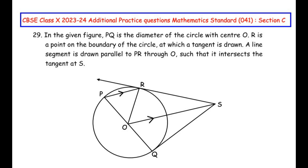Hello and welcome to my channel. In this video we are going to solve the 29th question from CBSE class 10 2023-24 additional practice questions for mathematics standard with subject code 041, section C, where each question is of three marks. This question has an OR question as well — we will be solving both questions in the same video. This question is a combination of the circles and triangles chapter.